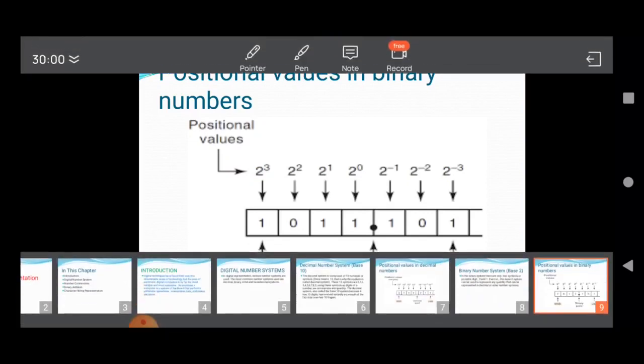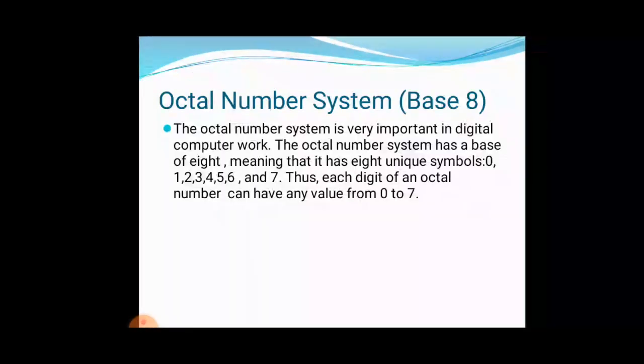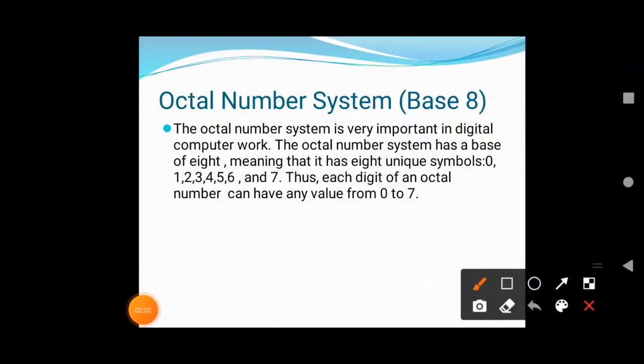Base 8. The octal number system is very important in digital computer work. The octal system has a base of 8, meaning that it has 8 unique symbols: 0, 1, 2, 3, 4, 5, 6 and 7. 0 to 7. Thus, each digit of an octal number can have any value from 0 to 7. The octal system is also a positional value system wherein each octal digit has its own value or weight expressed as a power of 8.